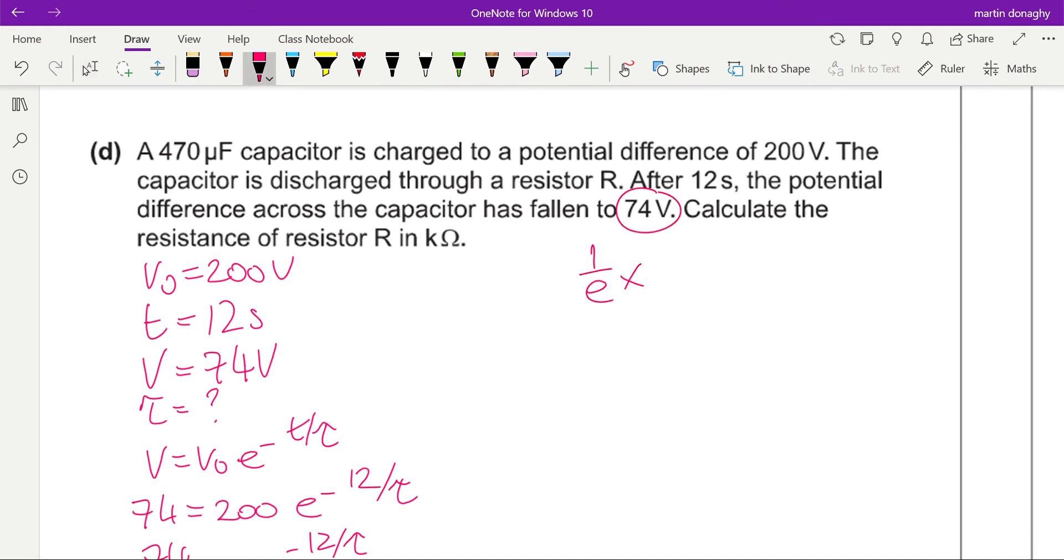But what we can notice from these values is 1 over e times 200 roughly equals 74. Okay, therefore, that time taken for it to drop from 200 to 74 must be the time constant. And just by noticing that, you can get that tau is 12 seconds, and that is the way they expect you to do this question. But both these ways would be marked correctly.